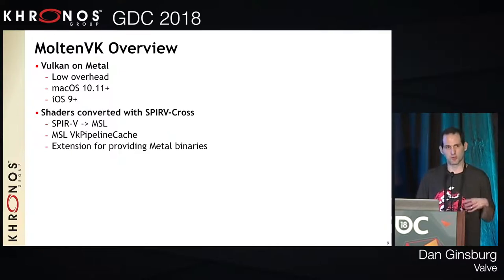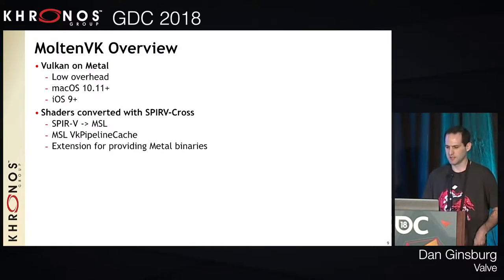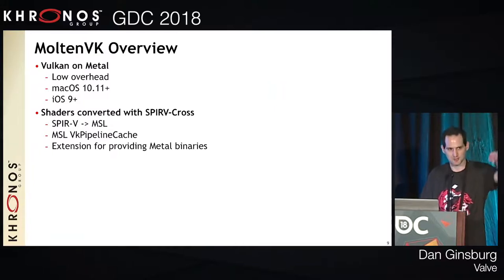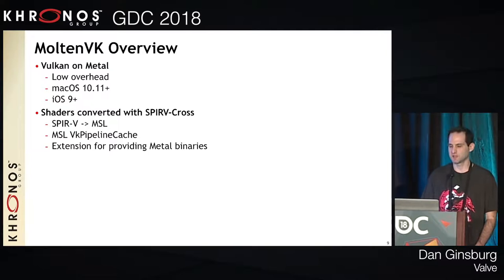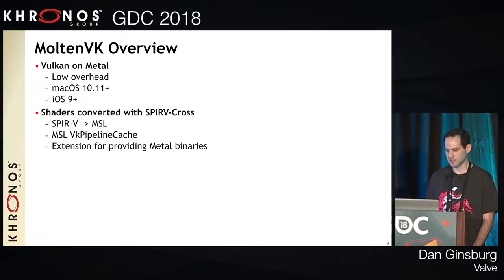There are limitations and we're working to formally define those within the Portability Working Group. We're implementing the VK pipeline cache so the MSL generated from SPIR-V can be stored on disk. There's also a MoltenVK-specific extension for providing Metal binaries directly, which means you can do all your shader compilation offline for the fastest possible pipeline builds. The loader was ported so that MoltenVK serves as the installable client driver — whereas on Windows or Linux the IHV provides their driver and the loader loads it, here MoltenVK is the ICD from the loader's perspective.